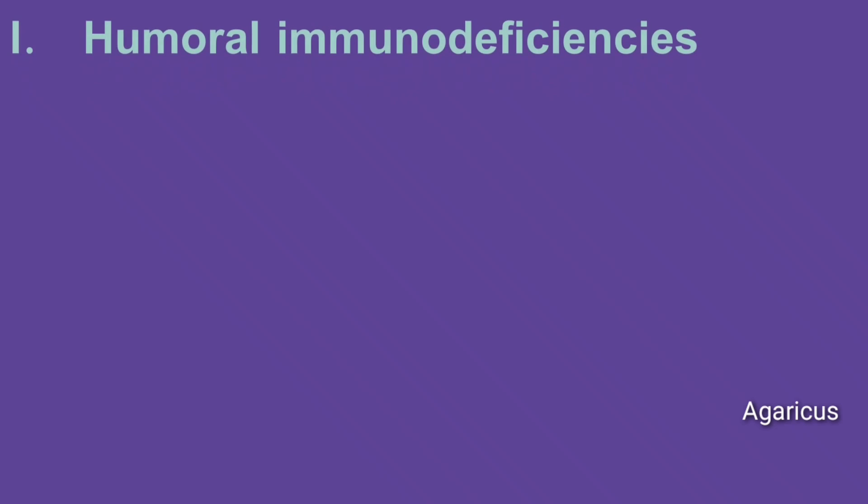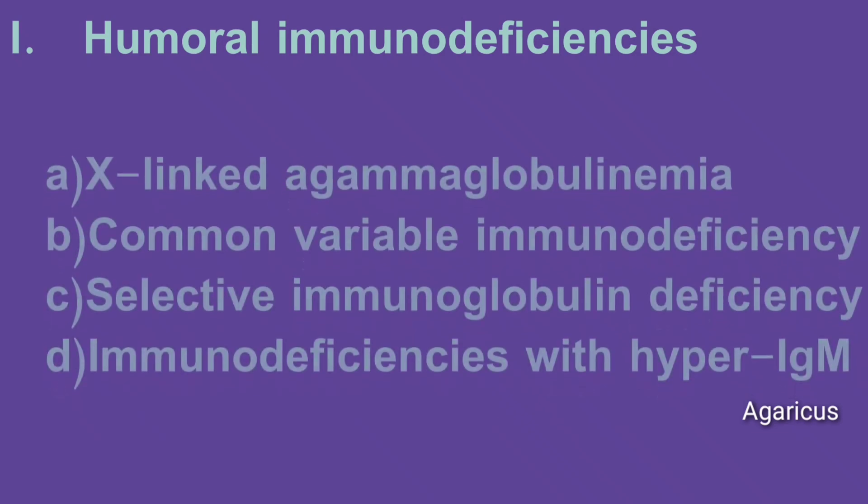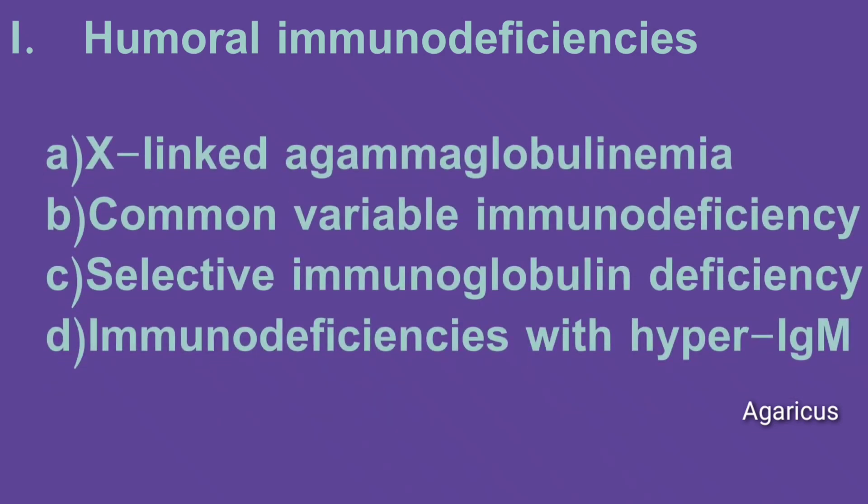Humoral immunodeficiency examples include: X-linked agammaglobulinemia, common variable immunodeficiency, selective immunoglobulin deficiency, and immunodeficiencies with hyper-immunoglobulin M.